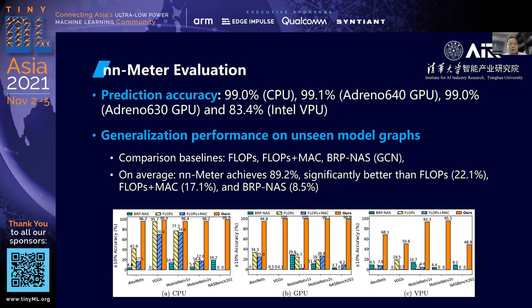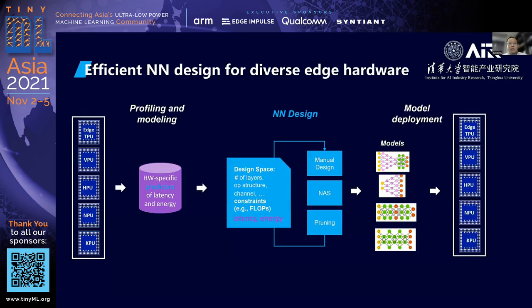Here I show you some results. On CPU, GPU, and VPU, our approach significantly outperforms baselines, including the FLOPs-based, MAC-based, and kernel-based approaches. With our latency predictor, we can plug these predictors into NAS systems so that we can build customized models for different hardware platforms.